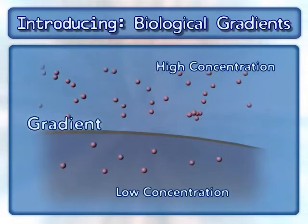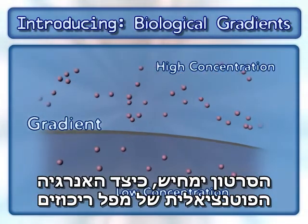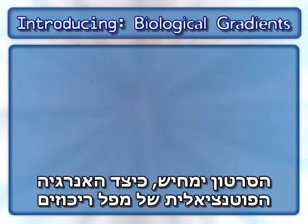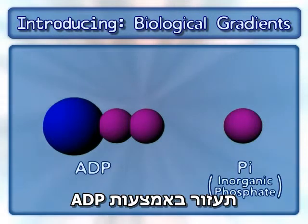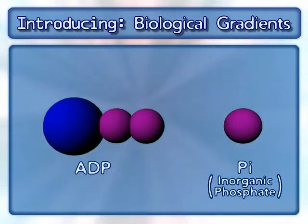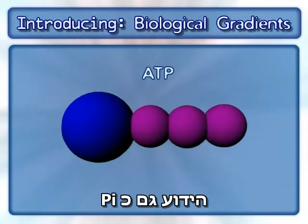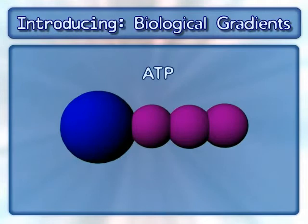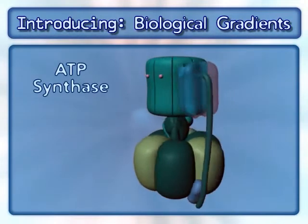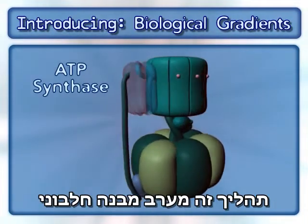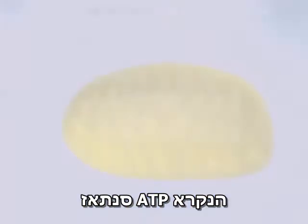This animation will demonstrate how the potential energy that results from a hydrogen ion gradient uses ADP and inorganic phosphate, also known as Pi, to synthesize ATP. This process involves an enzyme complex called ATP synthase.